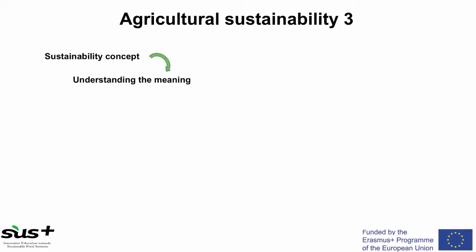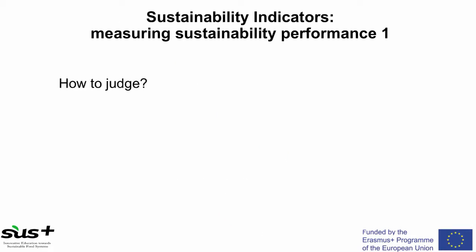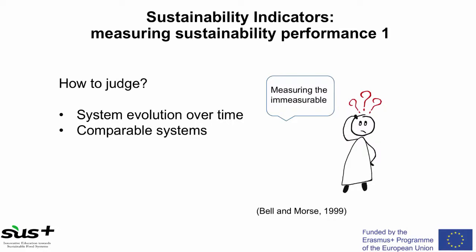The sustainability assessment starts with the sustainability concept definition — understanding its meaning, defining the principles of sustainability, then the objectives to be achieved and what should be sustained — for example the system boundaries and the spatial and time scale — and finally the selection of indicators and type of indicators. The indicator is a very critical issue as it defines how to judge. There are four different types of indicators: those that define system evolution over time, for example comparing one farm today and then after five years; those that compare comparable systems such as two homogeneous farms; those that define optimal objectives; and finally threshold limits, where above the threshold is considered sustainable.